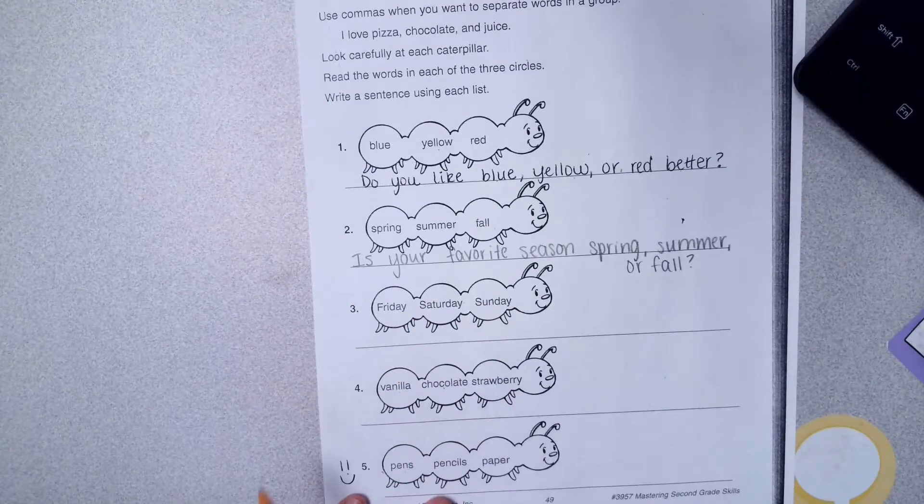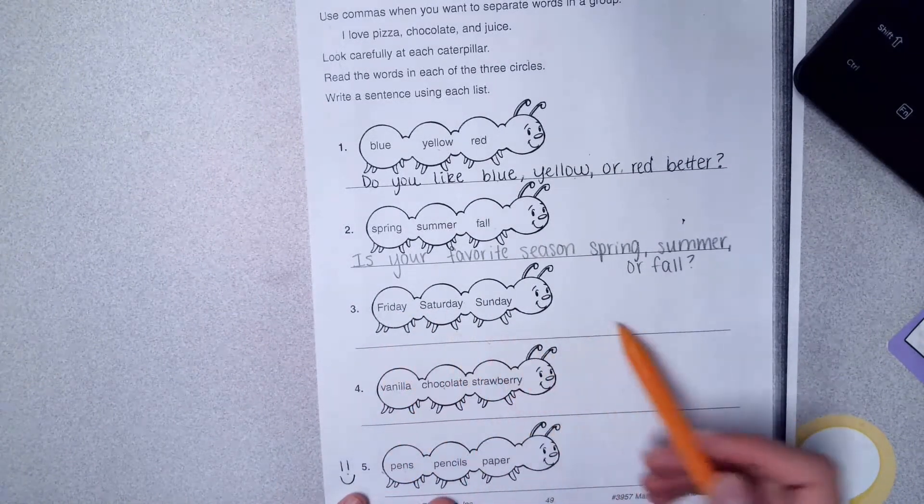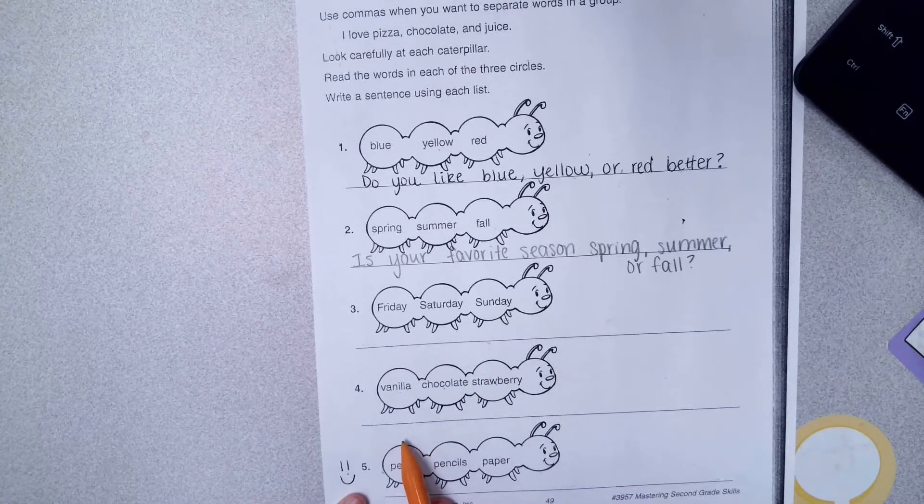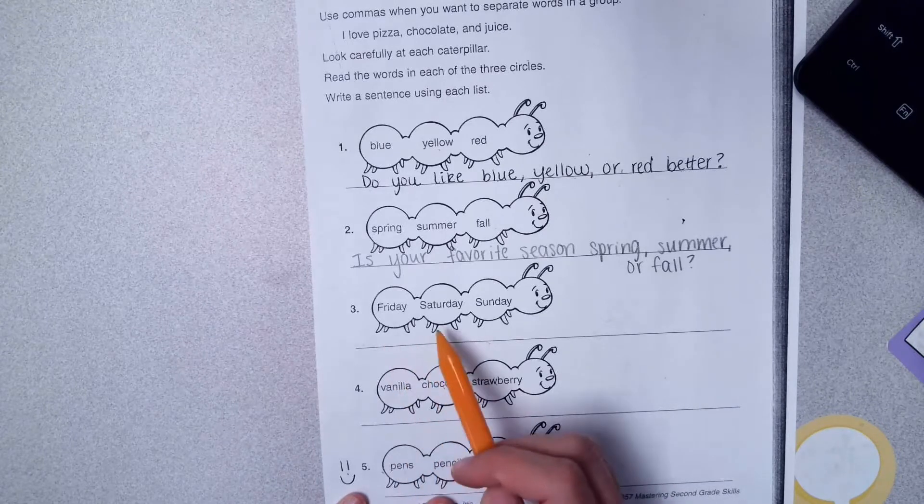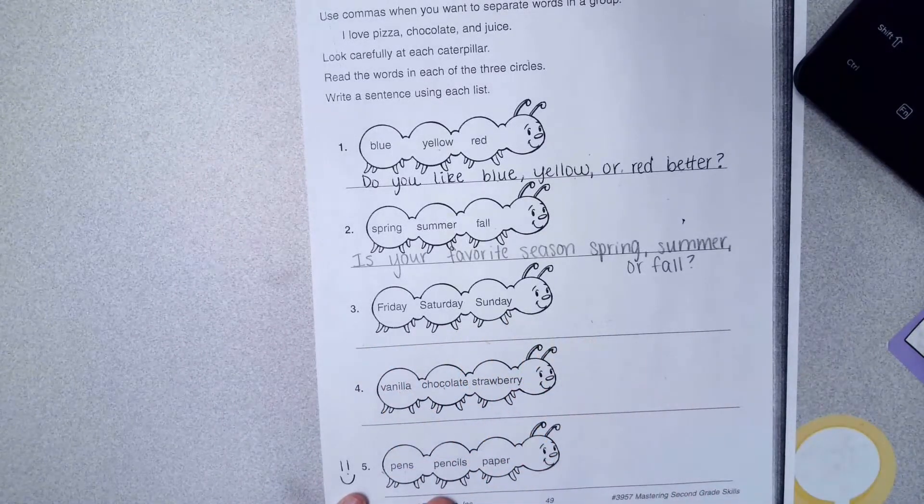And then Friday, Saturday, Sunday. It might say like, 'On the weekend, Friday, Saturday, and Sunday,' or 'On the weekend, Friday comma, Saturday comma, Sunday,' or 'I'm going on a trip on Friday, Saturday, and Sunday,' or something like that.